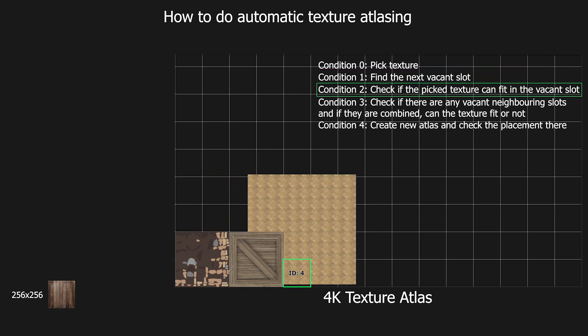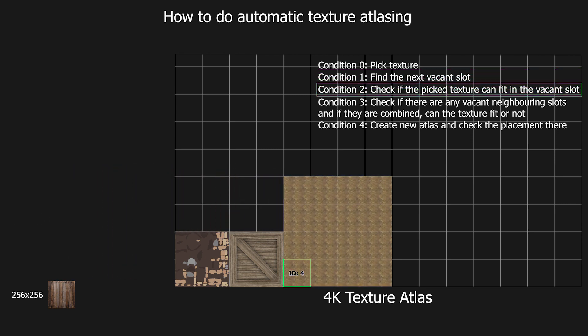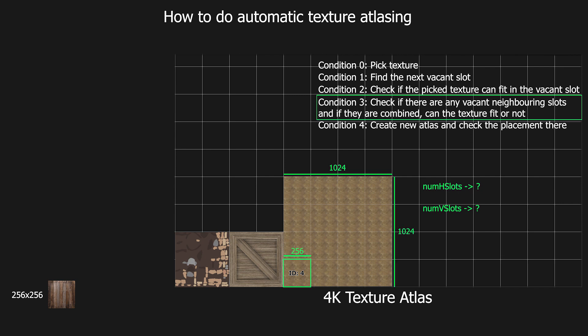We can clearly see that the texture is not going to fit in slot ID 4 alone. This is where we'll have to search for non-immediate slots as well. To do that, we first find the number of required horizontal and vertical slots to make the texture fit. By dividing the width of the texture by slot width and the height by slot height, we get the required slot counts. We can then check for neighboring vacant slots by running a double for loop.